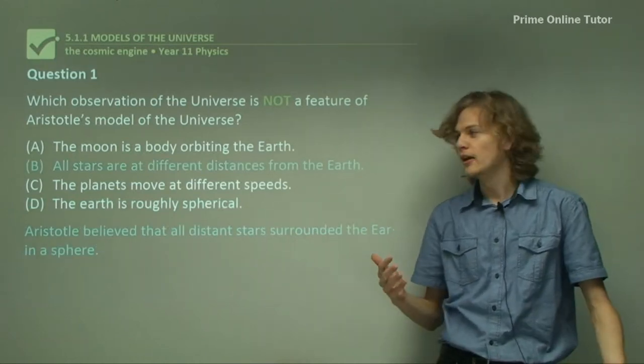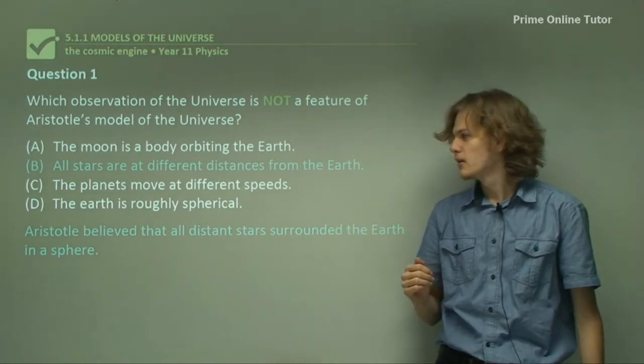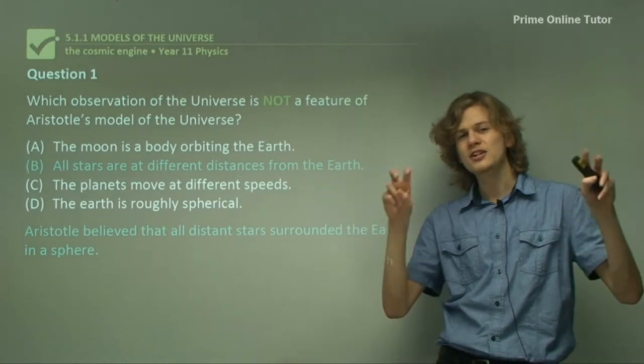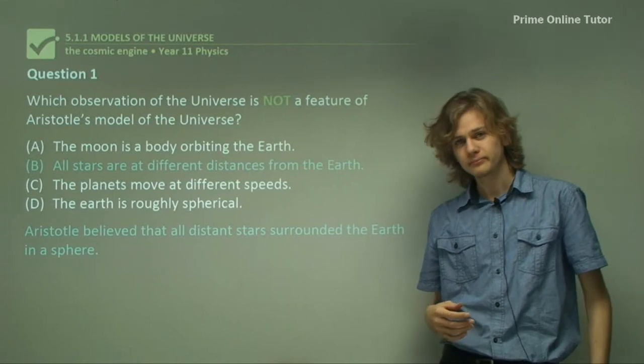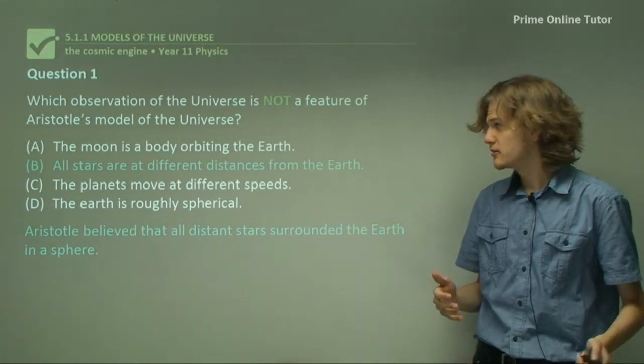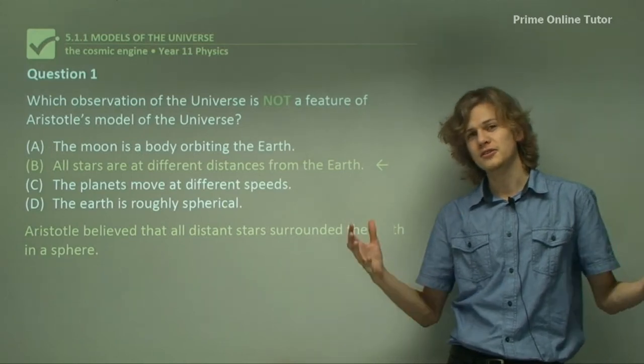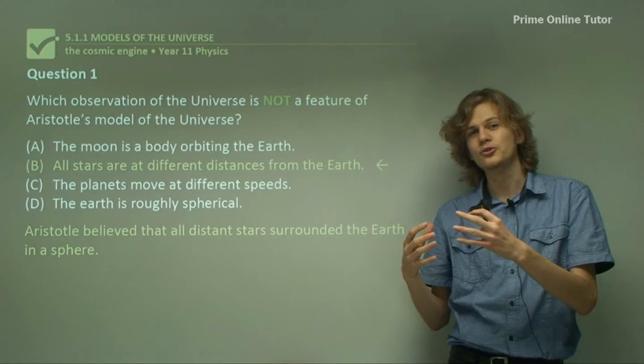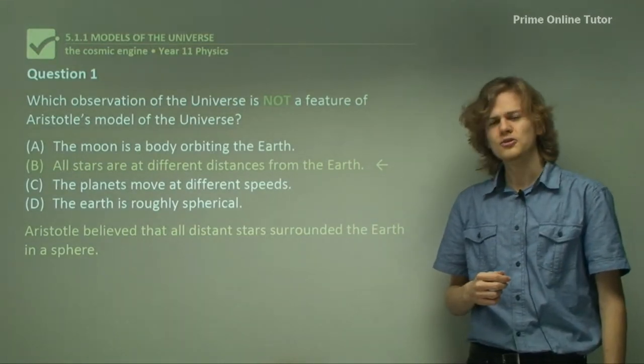So our final option then is B. All stars are at different distances from the Earth. Now, Aristotle believed that all the stars were on a single sphere that was the edge of the universe. And today we know that this is not the case. So B is the correct answer. Today we know that all the stars are different distances from Earth. And in fact, our Sun is a star that's simply very close to Earth, which is what makes it different from all the others.